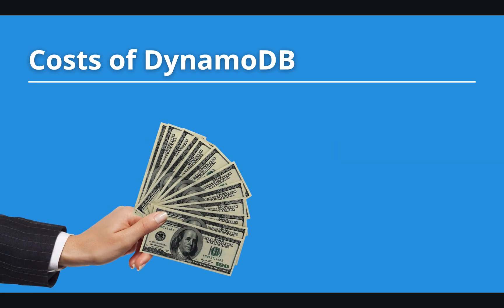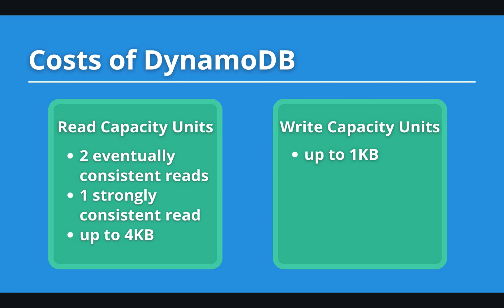Now let's say a few words about pricing. In DynamoDB, you are basically charged for the storage you use and the network traffic you produce. There are two key terms: read capacity unit and write capacity unit. One read capacity unit equals two eventually consistent reads or one strongly consistent read, and the data cannot exceed 4 KB. If the amount of read data is larger, you will be charged for more capacity units.